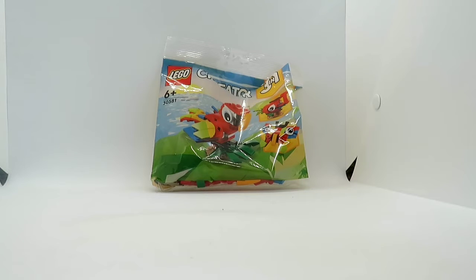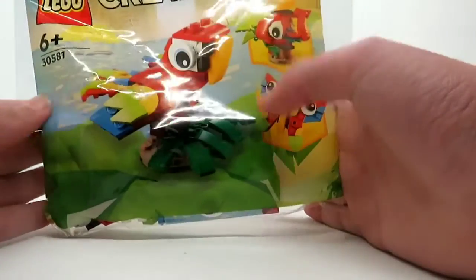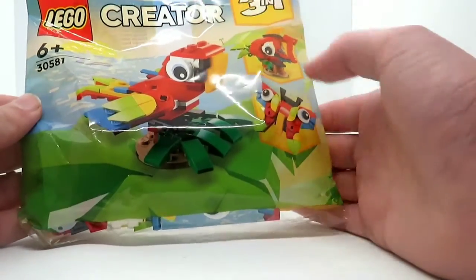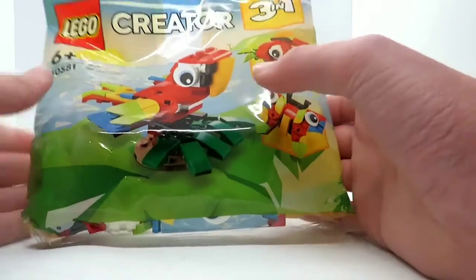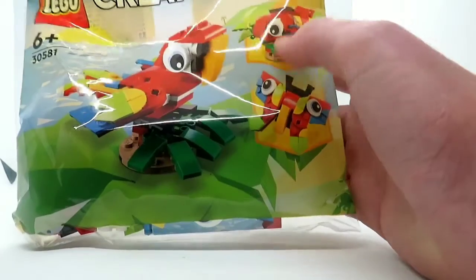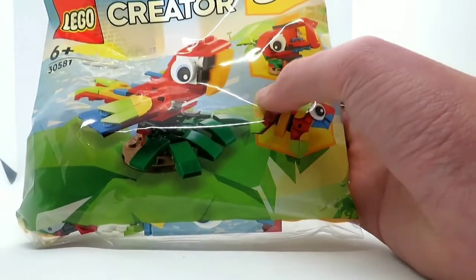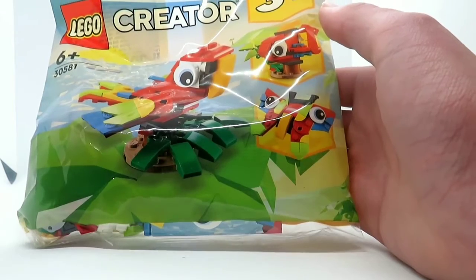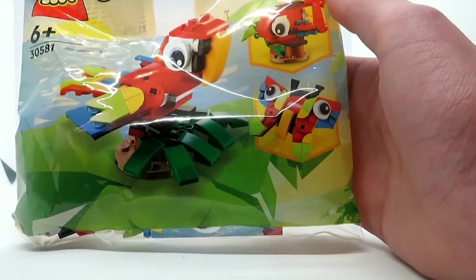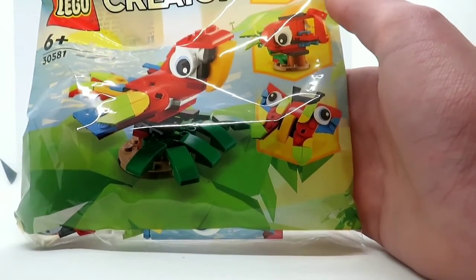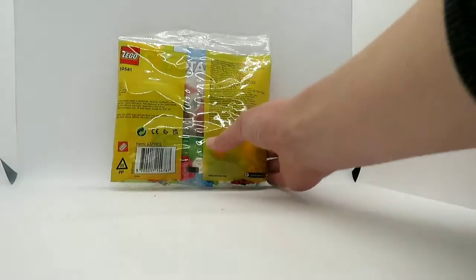This set has 66 pieces and comes with zero minifigures. Let's jump straight into it. On the front of the bag you can see a picture of the three builds: the parrot, a tropical fish, and a butterfly, which is cool because I don't think I've ever actually seen an official build of a butterfly in a set.